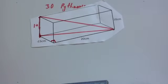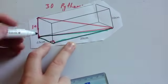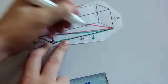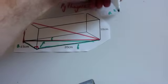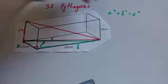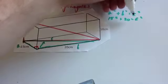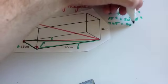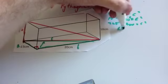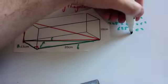Let's use Pythagoras' theorem. For this triangle on the base, side A is 15, side B is 20, and we're trying to find the longest side C. So A squared plus B squared equals C squared. 15 squared plus 20 squared equals C squared. 15 squared is 225, 20 squared is 400. Adding them together: 625 equals C squared. Square root of 625 is 25. So C equals 25.